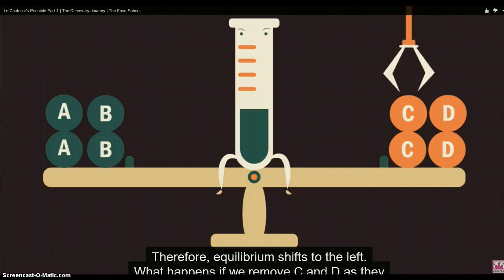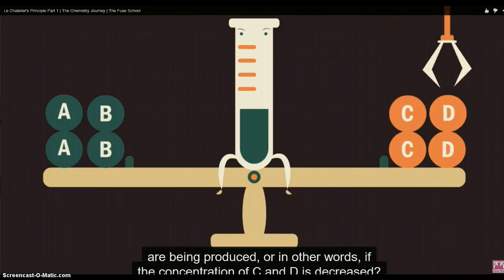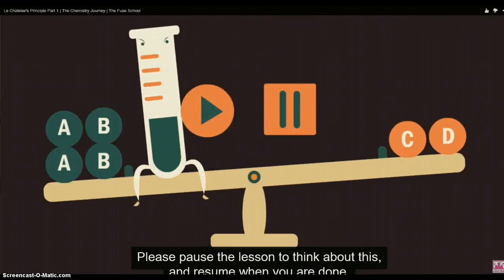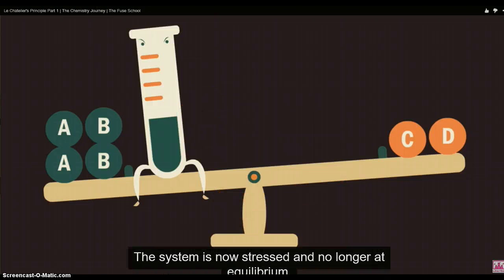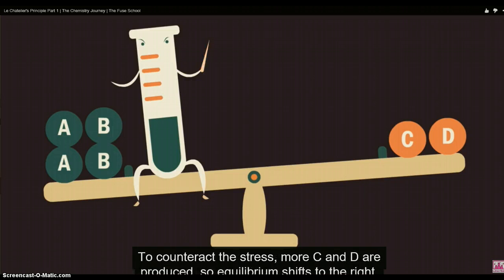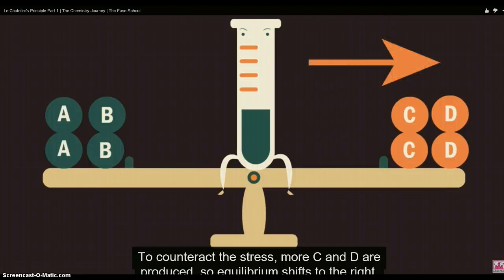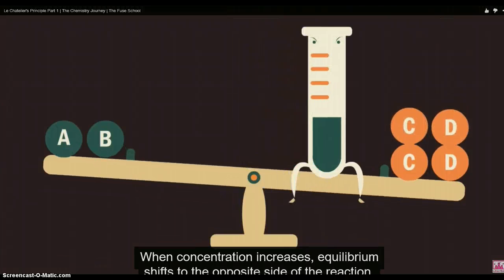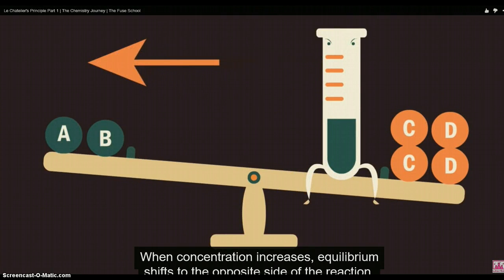What happens if we remove C and D as they are being produced, or if the concentration of C and D is decreased? The system is now stressed and no longer at equilibrium. To counteract the stress, more C and D are produced, so equilibrium shifts to the right. When concentration increases, equilibrium shifts to the opposite side of the reaction.